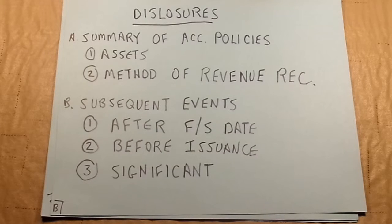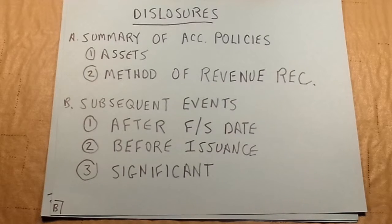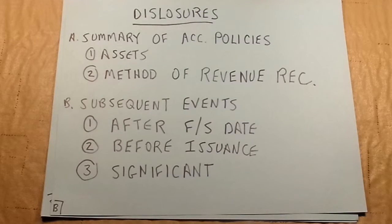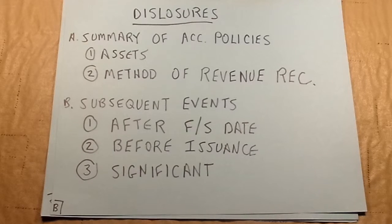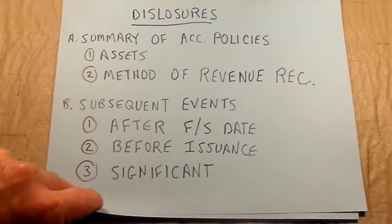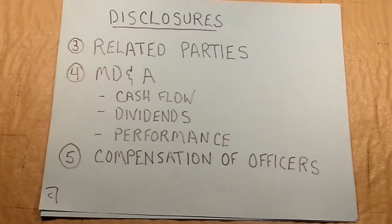A common disclosure required in all cases is subsequent events. A company might not have any, but a subsequent event is something that occurs after the financial statement date — often December 31st — but before issuance. For example, a company might issue financial statements on March 20th with a date of December 31st. Anything significant that happened between December 31st and March 20th would be disclosed as a subsequent event. It takes time to prepare financial statements, which is why there's a lapse before issuance.